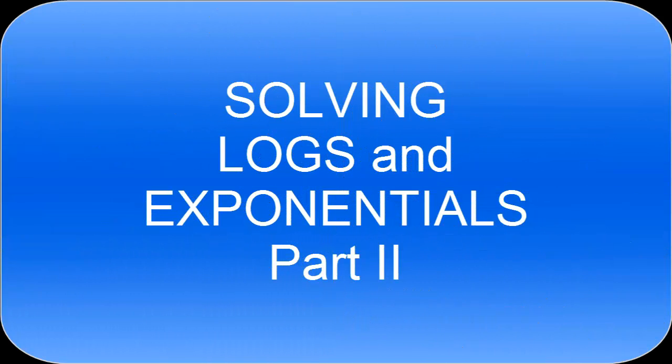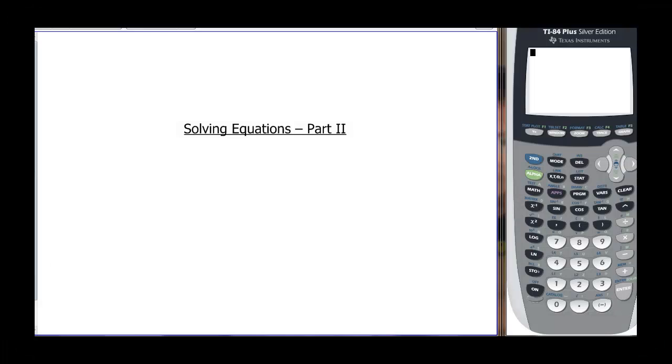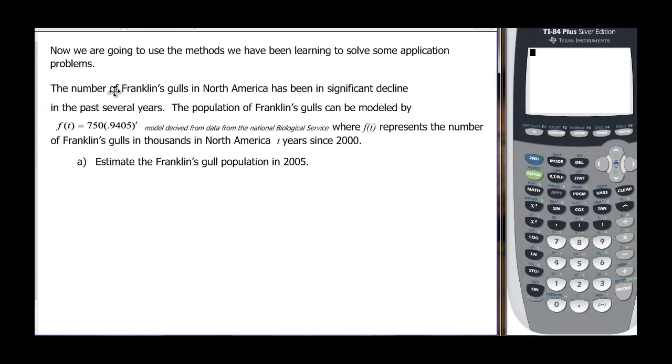This video will be solving equations again, but this time we're going to be using applications. The number of Franklin's gulls in North America has been in significant decline in the past years. The population of Franklin's gulls can be modeled by the function f(t) equals 750 times 0.9405 to the t. Notice that base is less than one, so that tells us that it's declining. We're going to let f(t) represent the number of Franklin's gulls in thousands in North America, and t is since 2000.